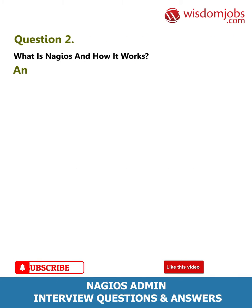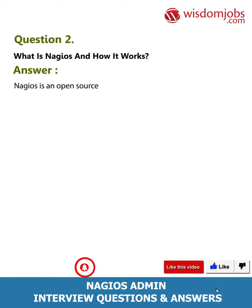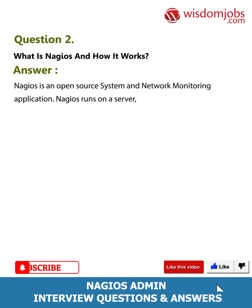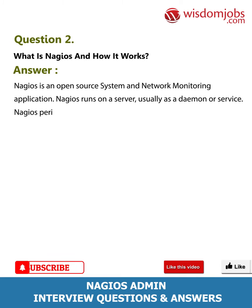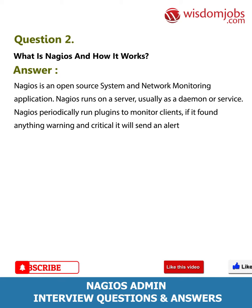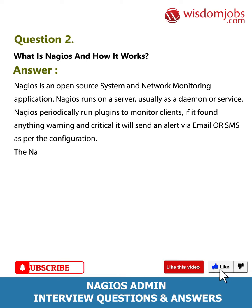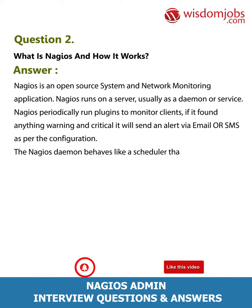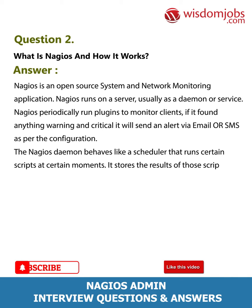Question 2: What is Nagios and how does it work? Answer: Nagios is an open source system and network monitoring application. Nagios runs on a server, usually as a daemon or service. It periodically runs plugins to monitor clients. If it finds anything warning or critical, it will send an alert via email or SMS as per the configuration. The Nagios daemon behaves like a scheduler that runs certain scripts at certain moments, stores the results of those scripts, and will run other scripts if these results change.